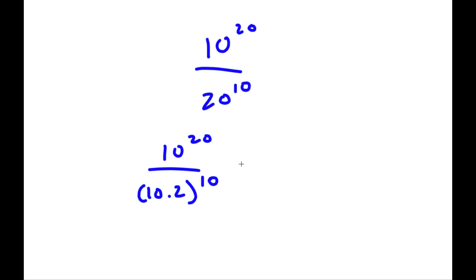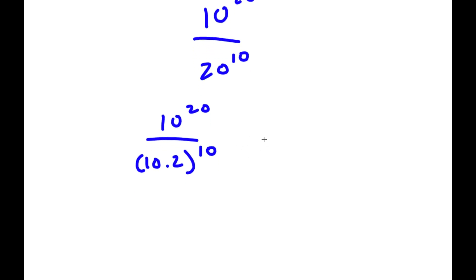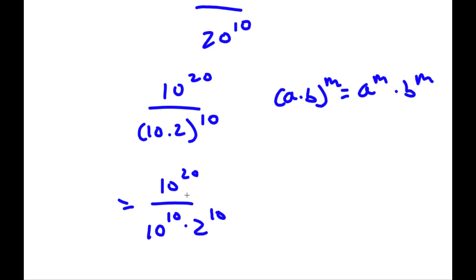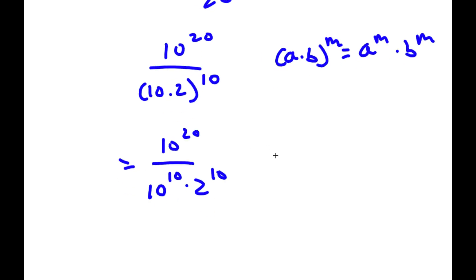This can be rewritten. An important property of exponents is that if I have something in the form a times b to the power of m, this is equal to a to the power of m times b to the power of m. So 10 times 2 to the power of 10 is going to equal 10 to the power of 10 times 2 to the power of 10.